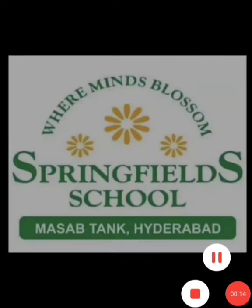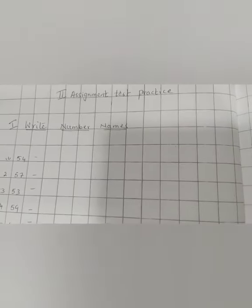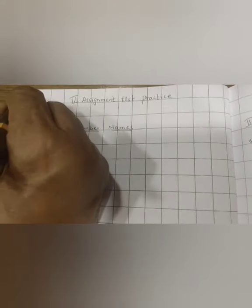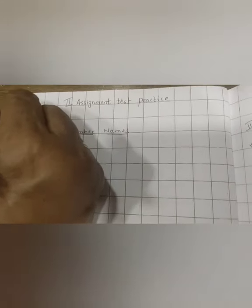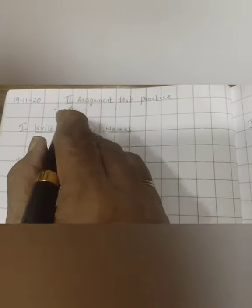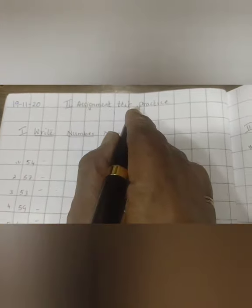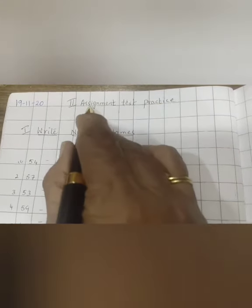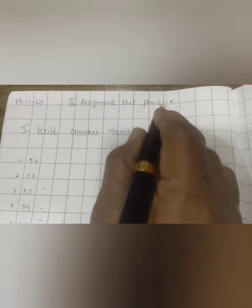Take out your maths books, children. In this, you have to write first today's date: 19-11-20. Second assignment test practice.